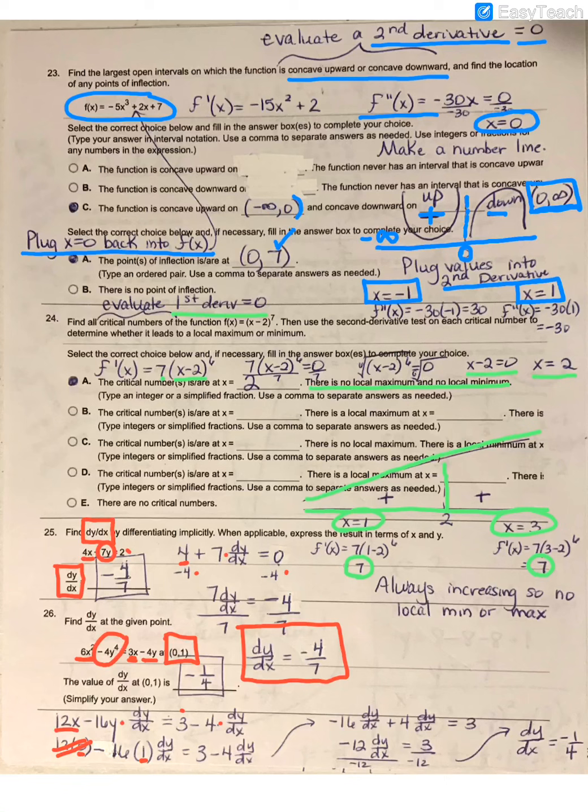I put the dy/dx terms on the same side. Since this was subtracted, I added the plus 4 dy/dx to both sides.